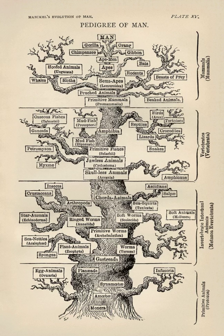Evolutionary biology is the subfield of biology that studies the evolutionary processes that produced the diversity of life on Earth, starting from a single common ancestor. These processes include natural selection, common descent, and speciation.